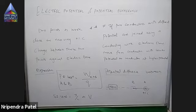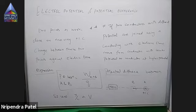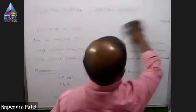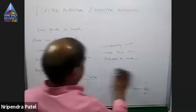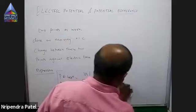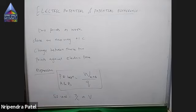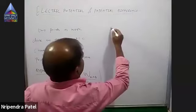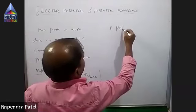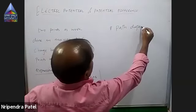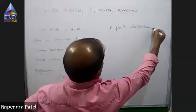Talking about the SI unit, the potential difference is measured in joule per coulomb, which is called the volt. So the SI unit of potential difference is joule per coulomb, that is, volt.